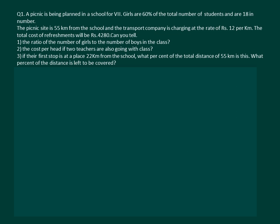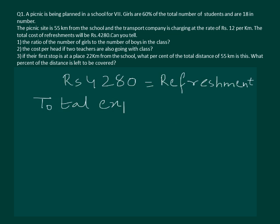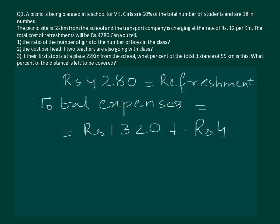In the question it is given that rupees 3,280 have been spent on refreshments. So the total expenses for the trip would be the transportation charges plus the refreshments, that is 1,320 plus 3,280, which comes out to be rupees 5,600.